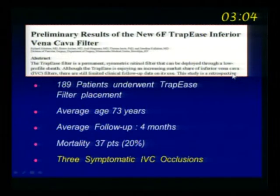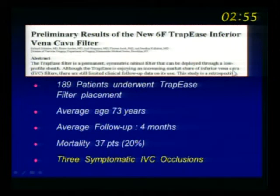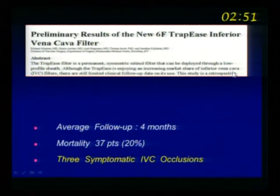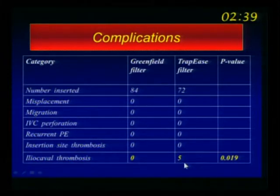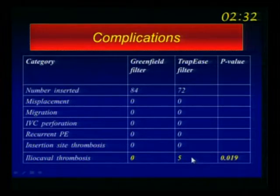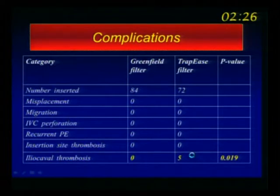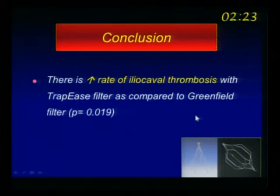We put a lot of filters in the Northeast. In the West Coast, where Peter Lawrence is, they're much more conservative — and probably they're right not to place filters on everybody. In our prospective study we proved, with statistically significant difference, that the trapeze was much worse than the Greenfield filter. We had five patients with thrombosis of the iliac veins or vena cava. That little paper cost $350 million of business for that company. But results are much better now since we stopped placing those filters — there's definitely a higher rate of iliocaval thrombosis with the trapeze filter.